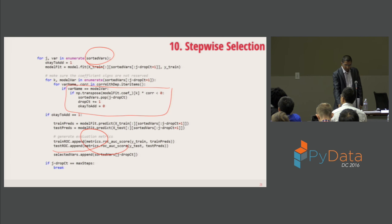A final question about pipeline sensitivity to the order of steps — particularly whether swapping correlation-with-target and multicollinearity checks matters. They don't necessarily have to be in a fixed order. Whenever you're doing multicollinearity removal, you're always checking correlation with the target anyway — you never want to discard something without checking that first. You could even do correlation-with-target first, drop long-tail variables, and then do multicollinearity. The steps are flexible and can be adapted to your data.